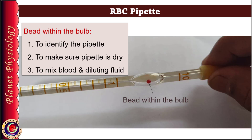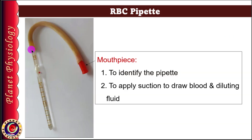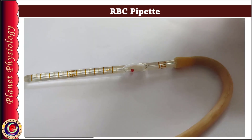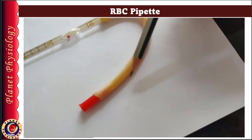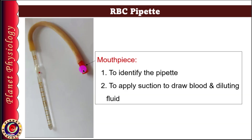Now let's look at the rubber tube attached behind the bulb. The tube is inserted in the last segment of the pipette and does not obstruct the markings and number mentioned after the bulb. The other end of the tube is fitted with a detachable mouthpiece, which is red-colored in the case of the RBC pipette. This mouthpiece not only supports the color scheme for easy identification, but also enables you to obtain the blood sample by applying a gentle suction.